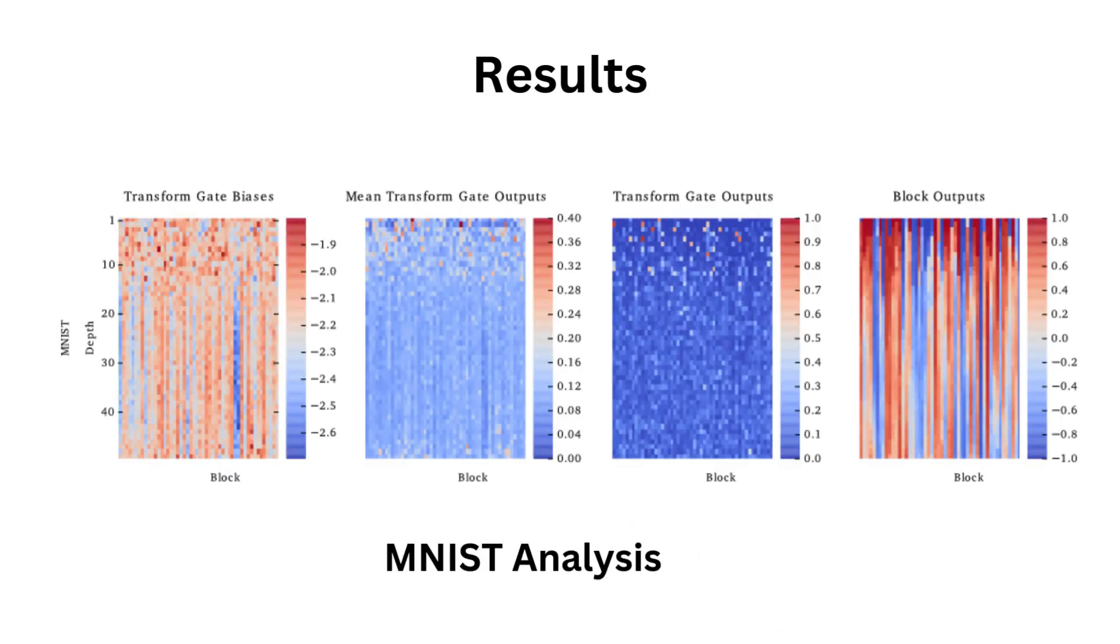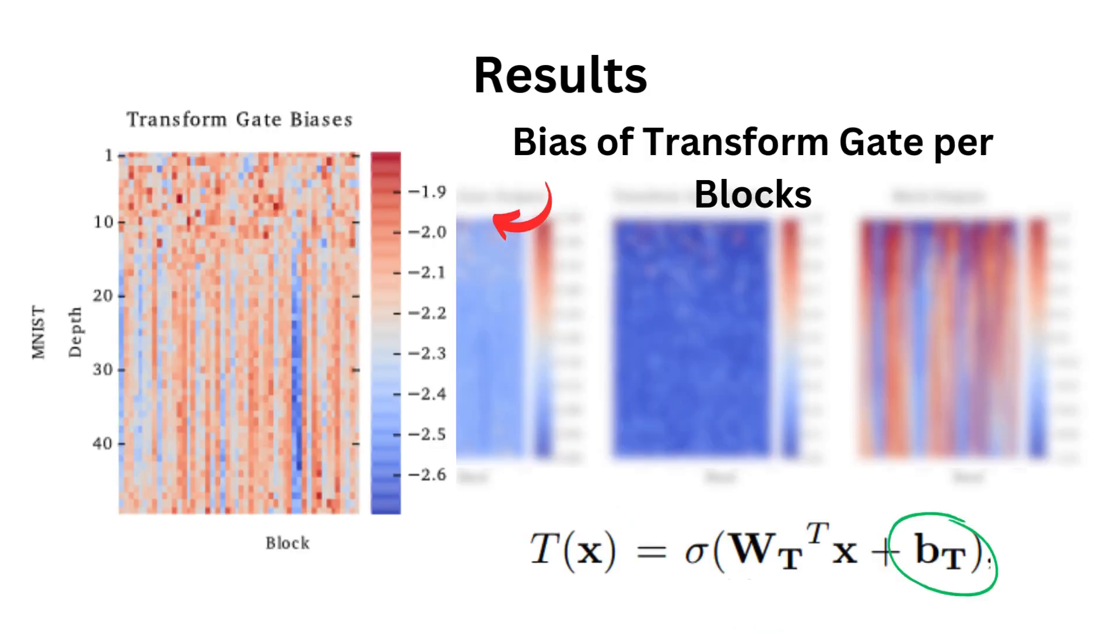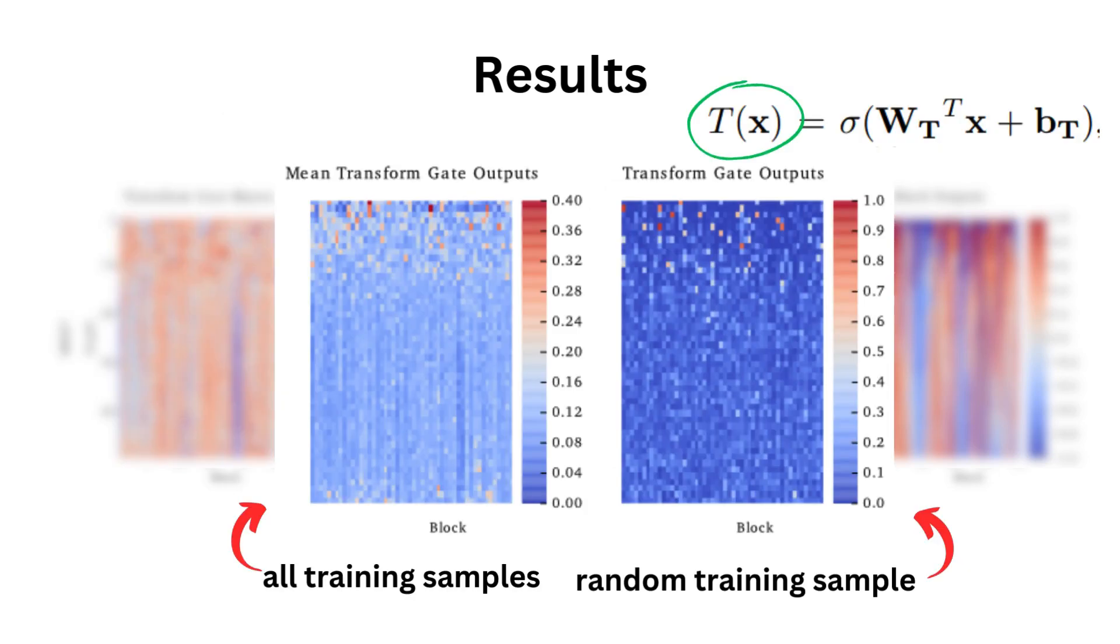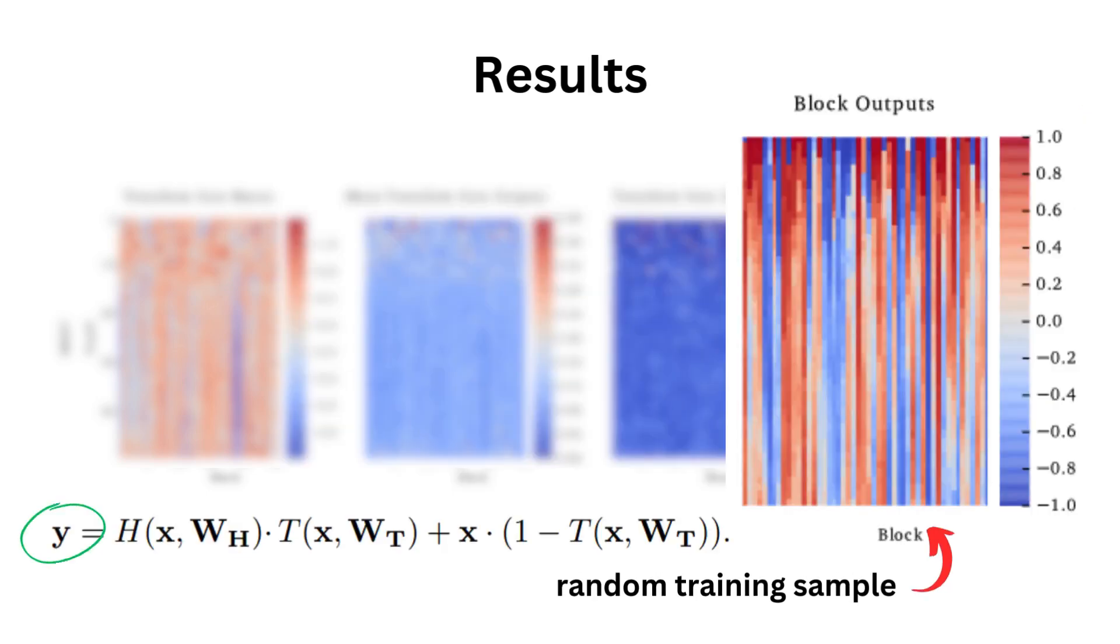Let's take a look at what each of the four graphs means now. We have the transform gate bias, which is the final bias result for each of the blocks. We have the two middle graphs, which have the output of the transform gate for all training samples on average and from a random training sample. Finally, we have the output of the whole block for a random training sample.